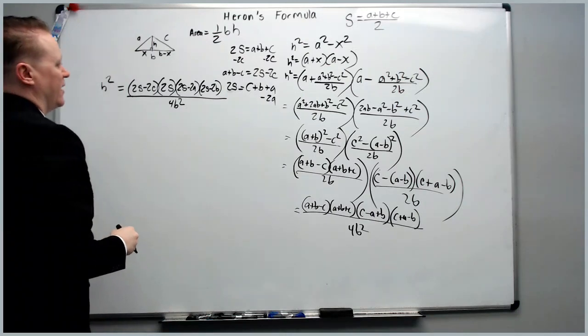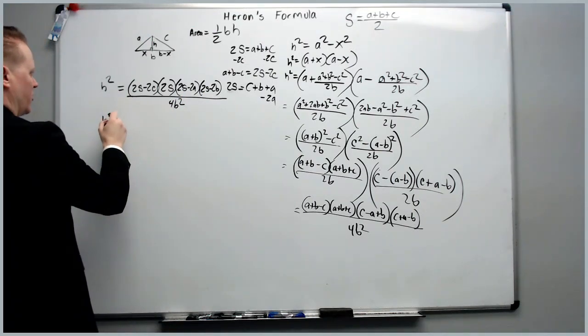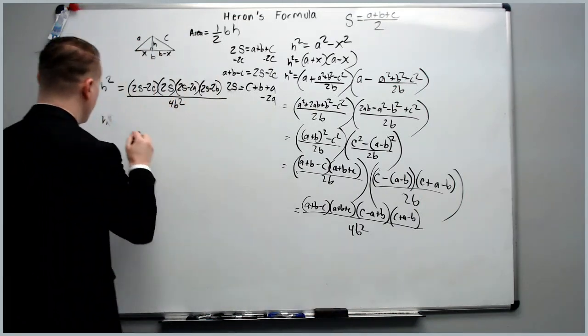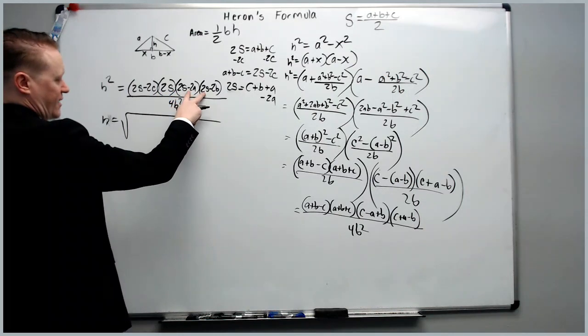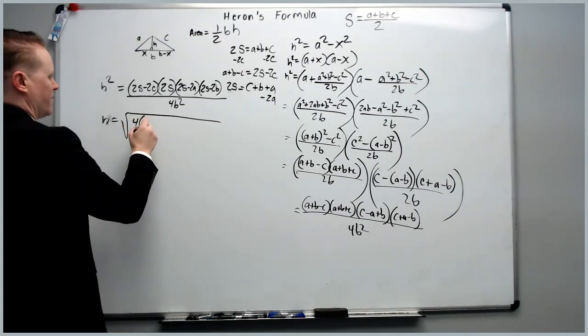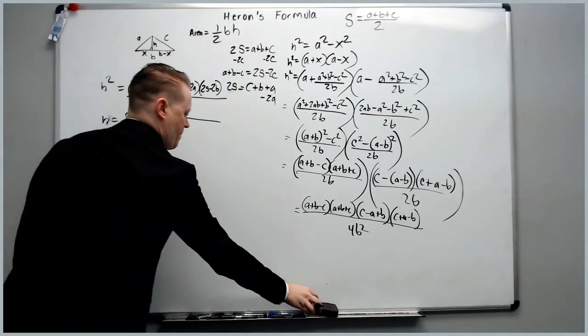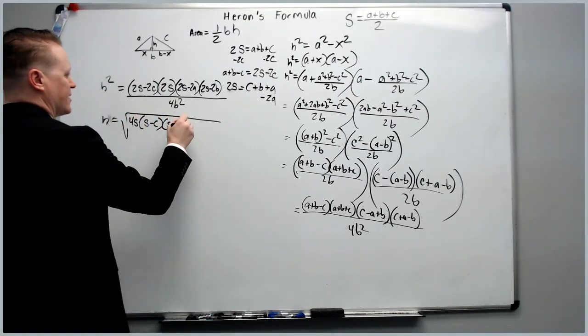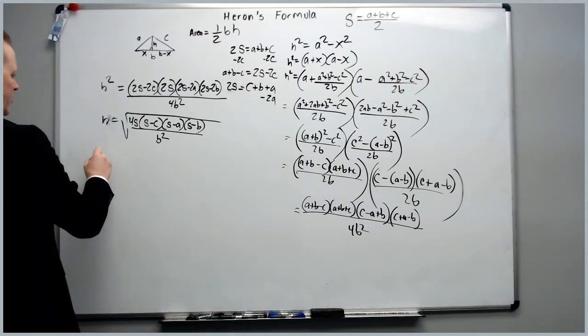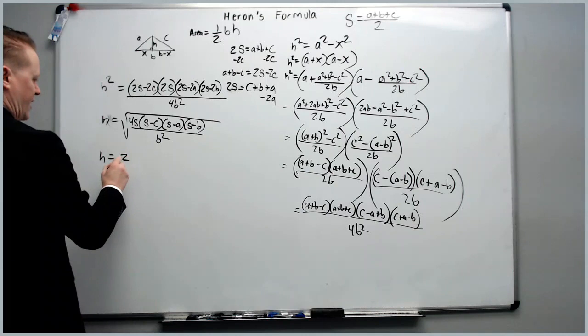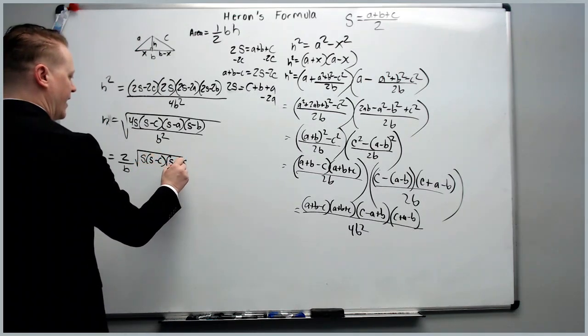So H squared equals this. We can then factor out a 2 from all of these expressions and cancel it with the 4. So H squared will equal, or we can use square root at the same time. H will equal the square root of, 16 over 4 is going to give us 4 times S minus C times S. We'll put the S in front, times S minus A times S minus B, the 16 over 4 is canceled, so this will be B squared. Okay, that's going to give us H equals 2 on the outside over B times the square root of S times S minus C, S minus A, S minus B.